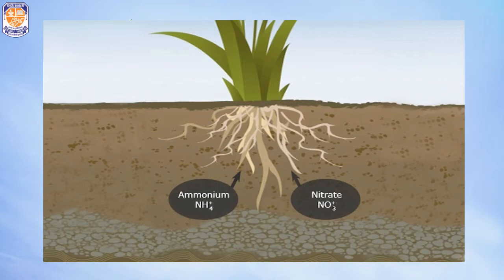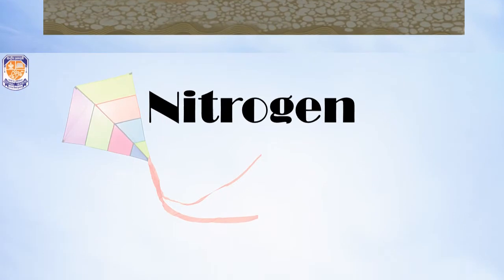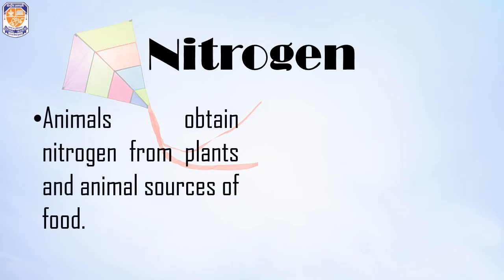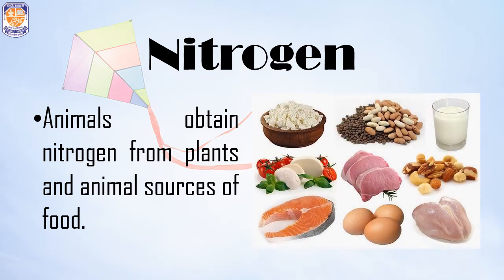Nitrates are made available by the process called nitrogen fixation. Animals, including human beings, also need proteins that contain nitrogen. The way our bodies normally get nitrogen is by eating plants, or animals that eat plants. Plants absorb nitrates from the soil, and when we eat plants, we get nitrogen in a form our bodies can use — through protein-rich foods.